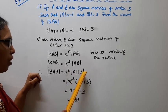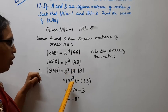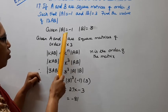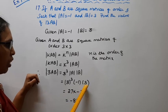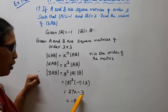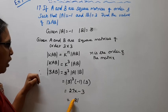3 power 3, determinant of A, determinant of B. 3 cubed, determinant of A value is minus 1, determinant of B is 3. 3 cubed is 27. 3 into minus 1 is minus 3. 27 into minus 3 is minus 81.